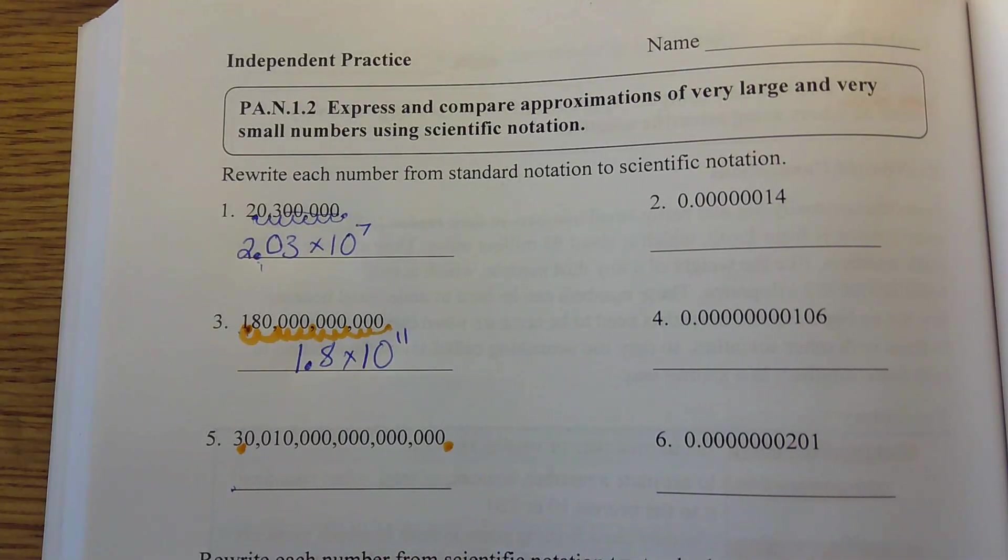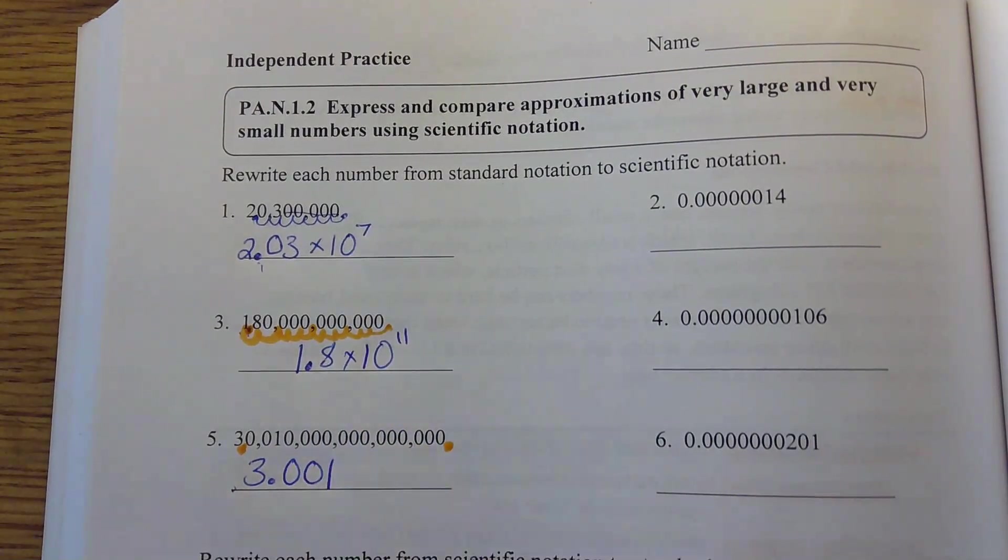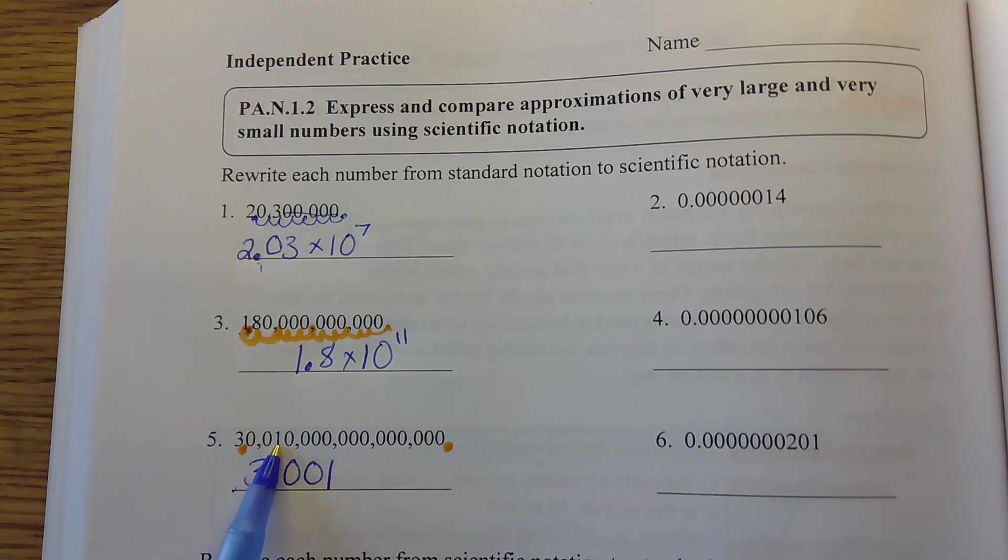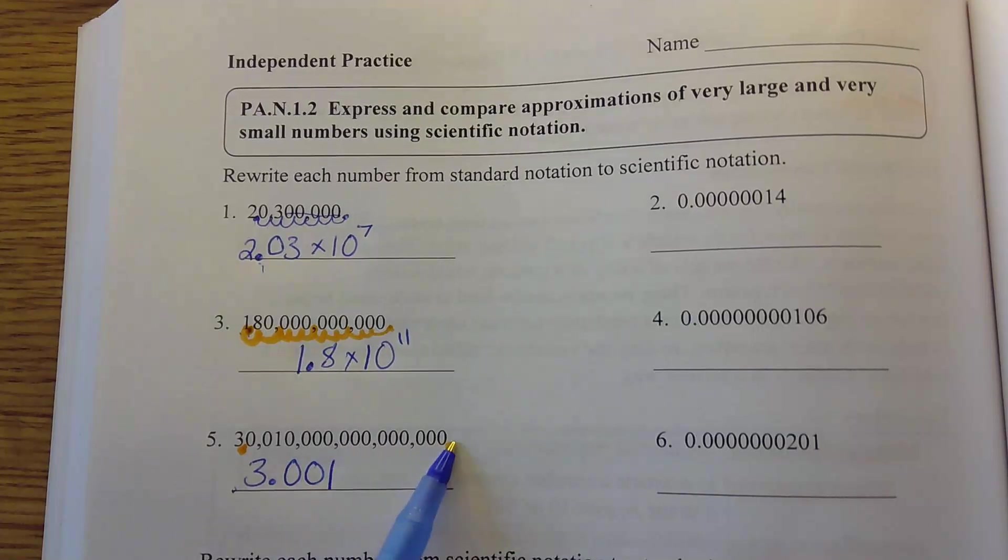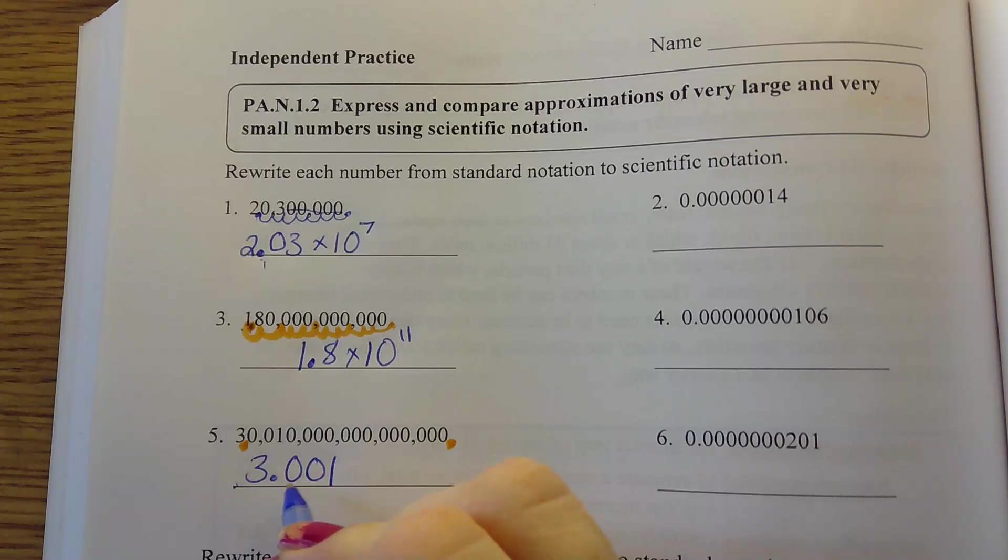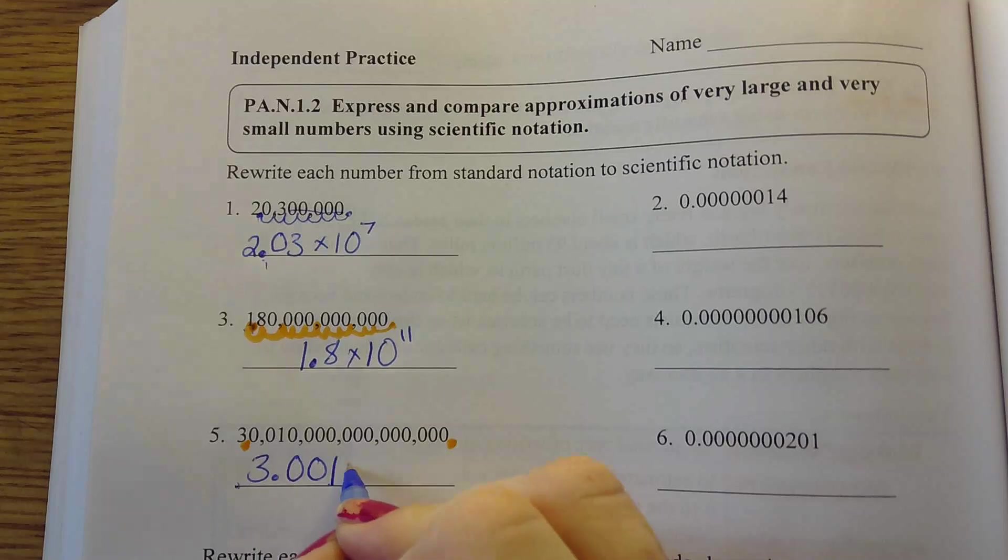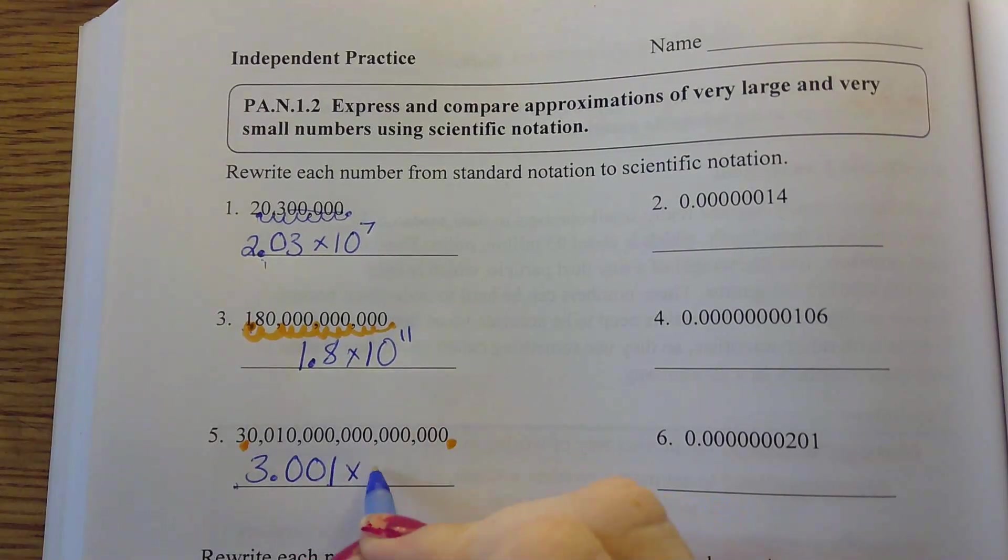And when you're writing out your decimal, like here, I have to write 3.001, but then after we get to the last number that's not a zero, we can stop. We don't have to add all these zeros in. So I've got 3.001, or 3 and 1,000th.